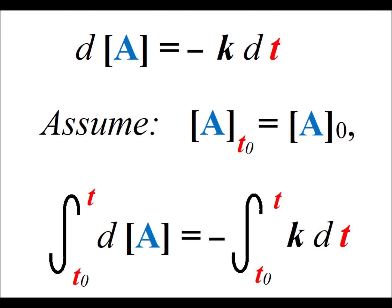Let's assume that the initial quantity of A at time t₀ is equal to [A]₀. What we're going to do to get the integrated form of the rate law is to integrate each side from t₀ up to the current time t.